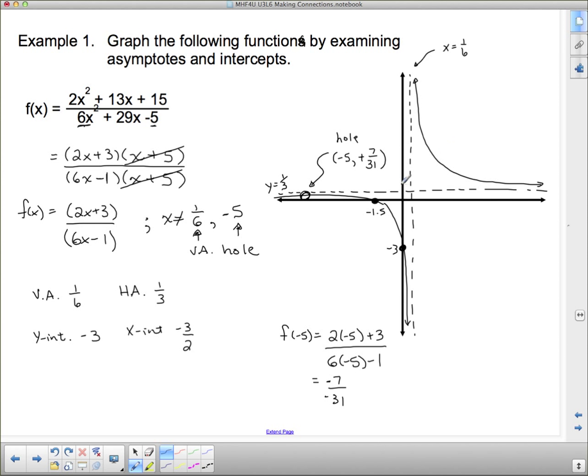That's about all we need to do. We could examine the behavior at the asymptotes if we wanted to, but when we have a linear over a linear, this is really all we need to graph it and graph it fairly accurately.